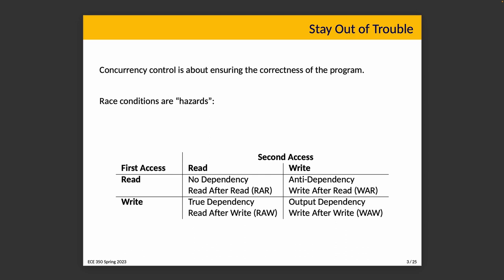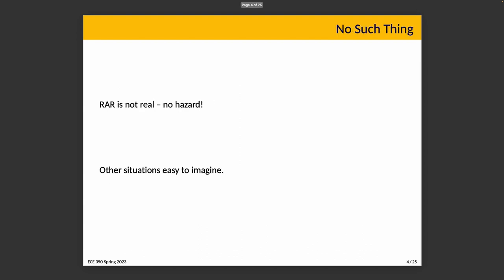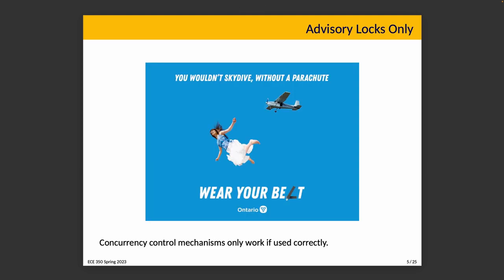Although you can frame the dependencies however you like, the important thing is using the concurrency control constructs to prevent an error. Locks are advisory — as in the analogy of seat belts in a car, they only work if you use them correctly. Nothing prevents the program author from accessing shared memory without holding the appropriate lock, and nothing compels unlocking the lock when finished.